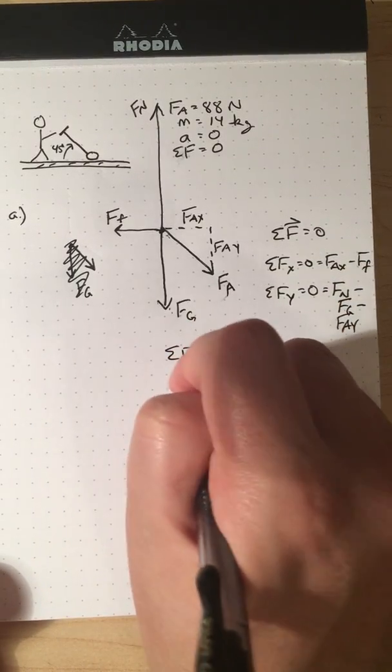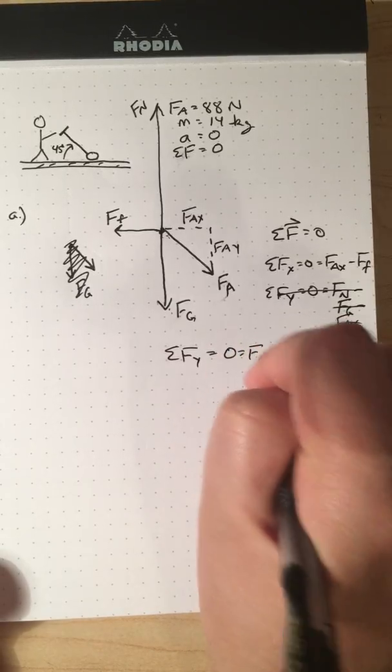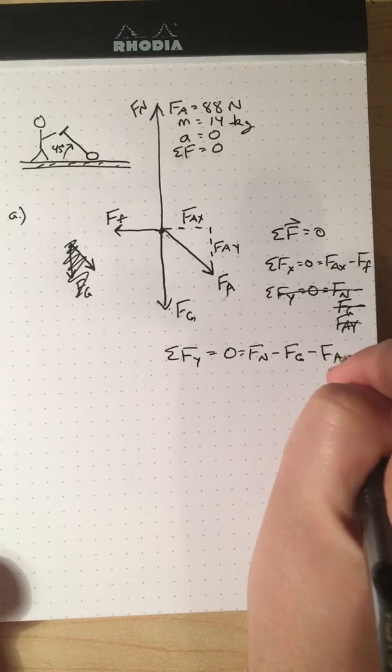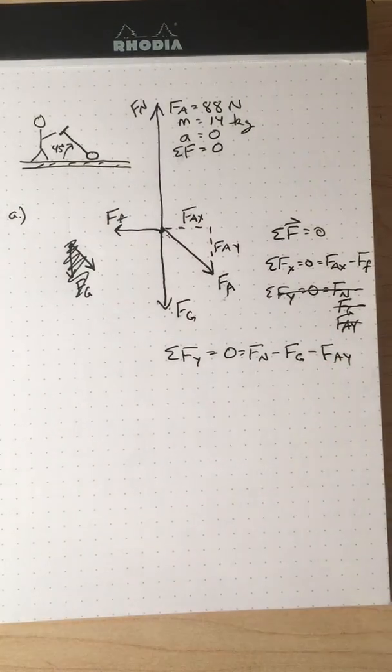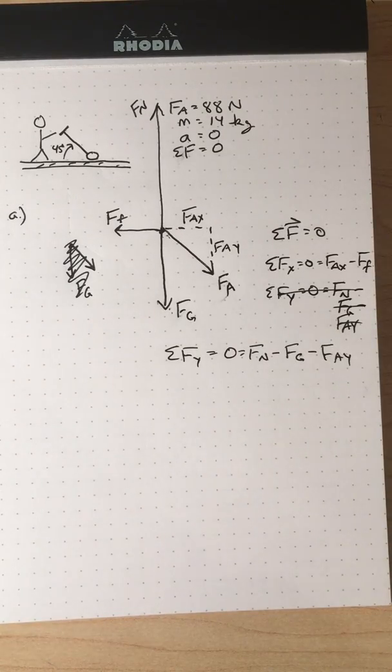Let me just write that bigger, or write that in one line so that that looks better. F_Y equals zero equals F_N minus F_G minus F_A_Y. So there we go, part A, free body diagram.